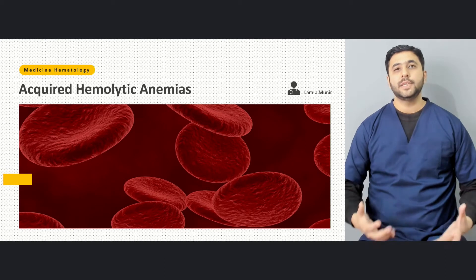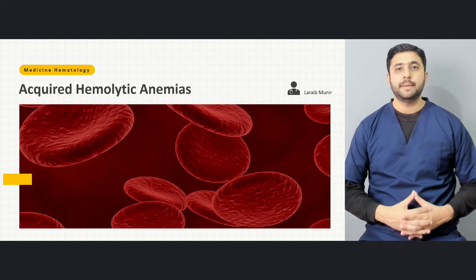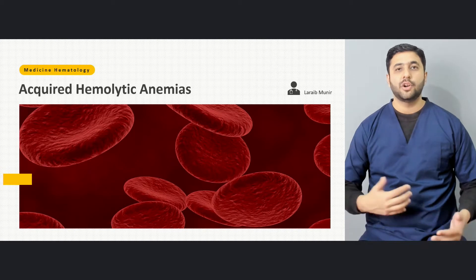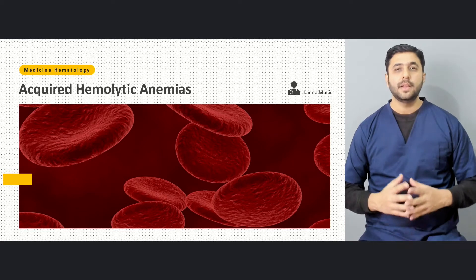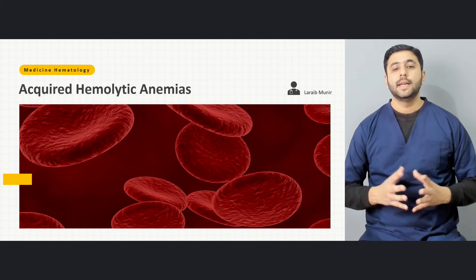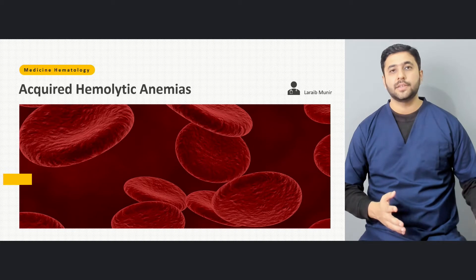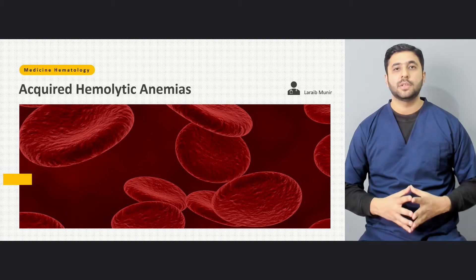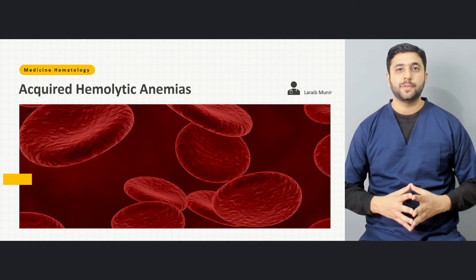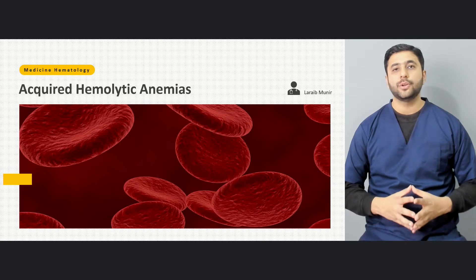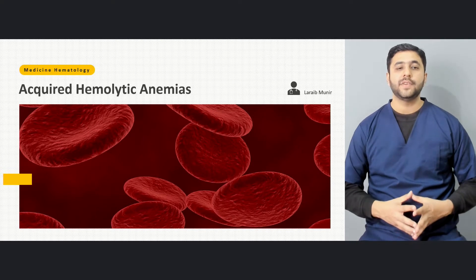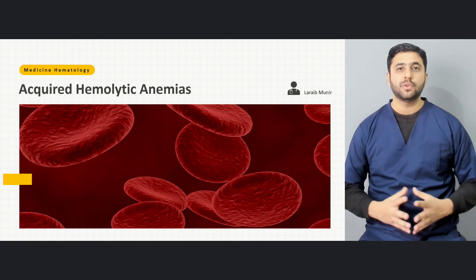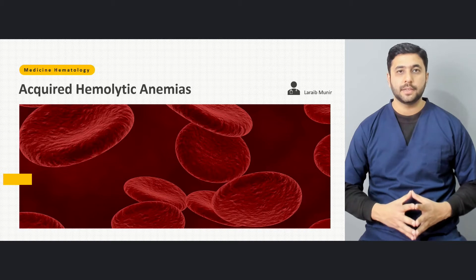This is a series of lectures on anemias and we started off by discussing the various types of anemias leading to the hemolytic anemias. In the previous lecture we discussed the inherited types of hemolytic anemias, and this lecture is a continuation in which we are going to talk about the acquired types of hemolytic anemias.